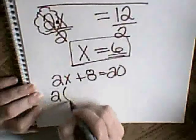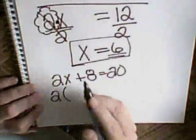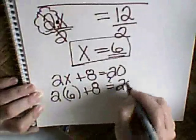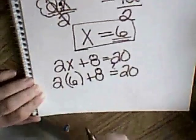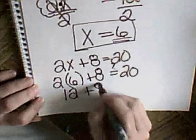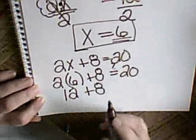So I'm going to have 2 times 6 (remember, x is 6) plus 8. And that should equal 20 if I have it right. 2 times 6 is 12 plus 8. And 12 plus 8 is 20.